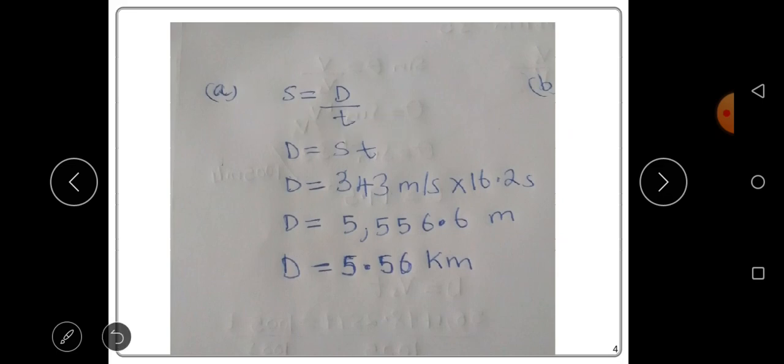So we want the distance. What do we do? We have to make distance the subject of the formula. So when we make distance the subject of the formula, this is what we get: distance is equal to speed times time. So what is the speed? Speed we have said is 343 meters per second because they have not stated the speed.